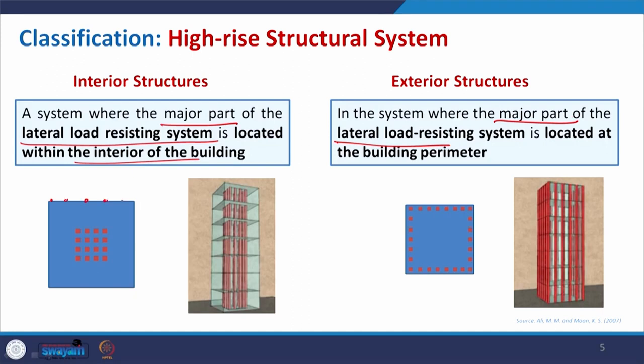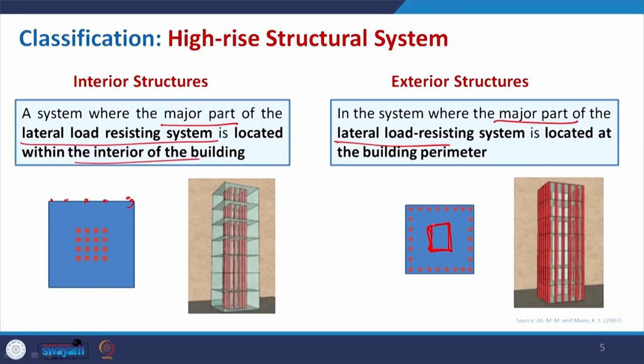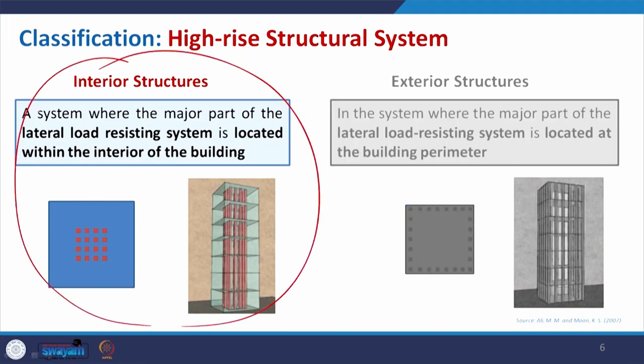We have to remember this is the major part — that means when you make this structure it is not a cantilever with no columns. Depending on the height and lateral pressure it will encounter, we can decide the number and spacing of exterior columns. When the building is too high, we may need to combine interior and exterior together, with a central core as well. In this lecture, as mentioned, we will only be discussing the interior structure and its different parts.